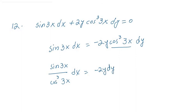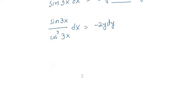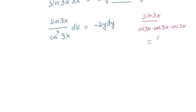Now I know that cos³(3x) means cos(3x) multiplied by cos(3x) multiplied by cos(3x) — the cube of cos(3x). So you can write it like cos(3x) · cos(3x) · cos(3x), and this term you can write as sine over that product.